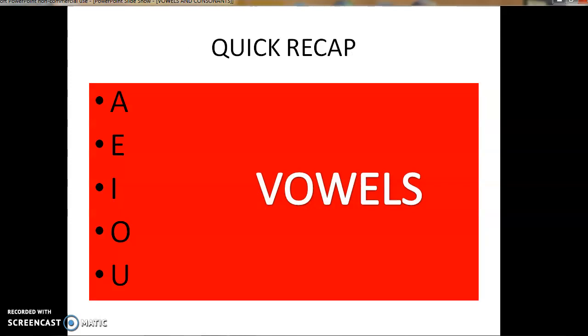Let's take a quick recap of the vowels. A, E, I, O, and U. A, E, I, O, U. These are the five vowels of the English alphabet.